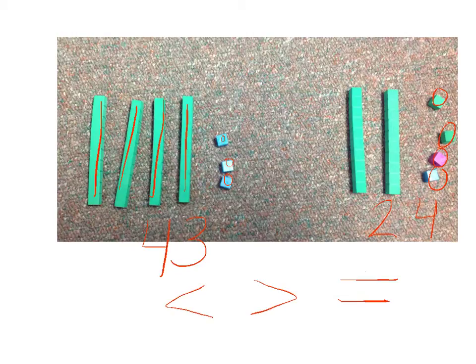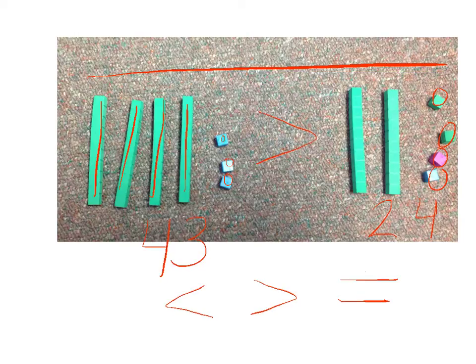So if we look at this, 43 is greater than 24. And it's important to teach the students to read just like they read on a page from left to right. So 43 is greater than 24. And that is how we compare two-digit numbers.